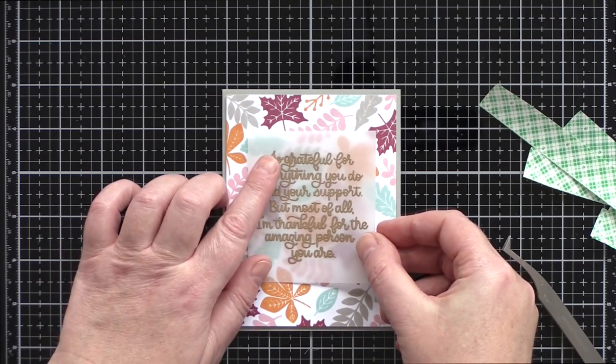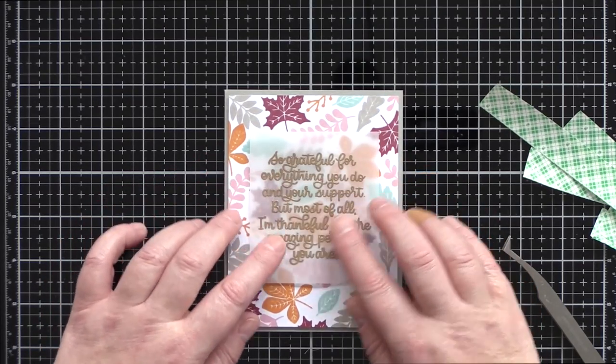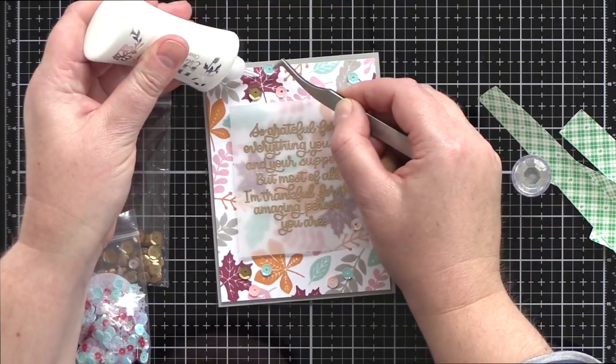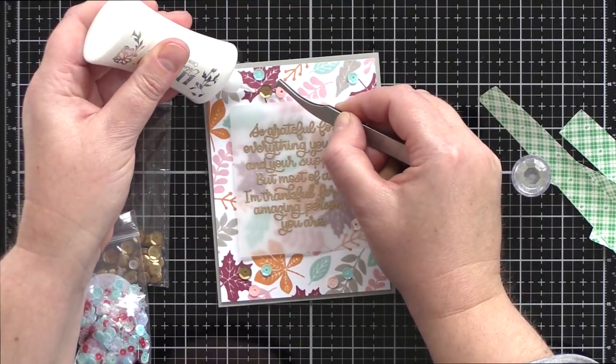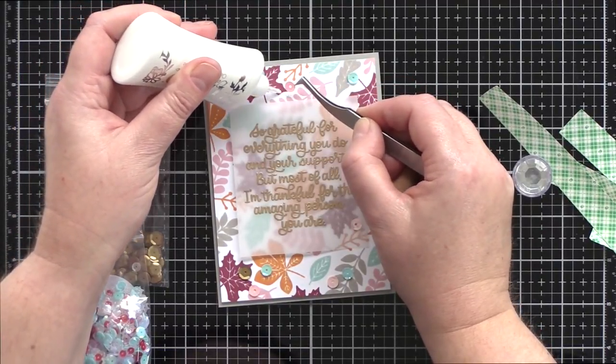I then added tiny pieces of foam adhesive to the back of the vellum and I chose areas where the lines of the text were slightly thicker in order that the adhesive wouldn't be visible from the front.